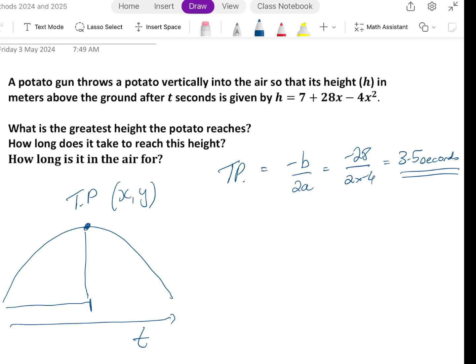If we substitute this value back into the original formula, so h is 7 plus 28 times 3.5 minus 4 times 3.5 squared, we will get a value of h equals 56, and h being in meters, we can then say that the height that the potato reaches is 56 meters at 3.5 seconds.